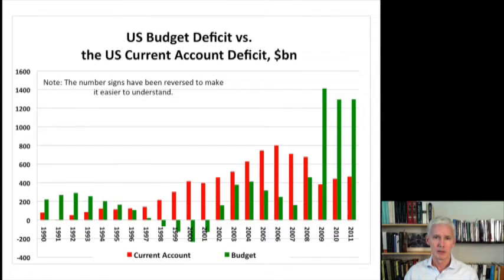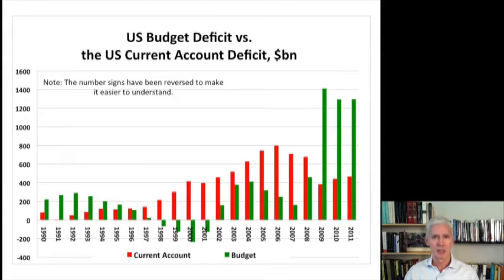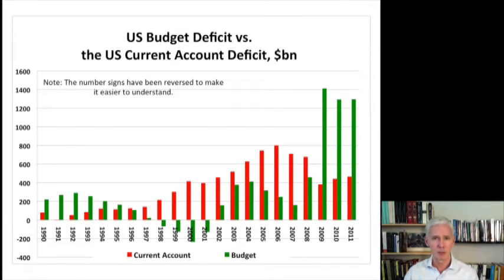So let's compare the U.S. current account deficit with the budget deficit. In this chart there are two bars. The red bar represents the current account deficit, and the green bar represents the government's budget deficit. I've flipped these bars over — they're primarily negative numbers, but in order to make them easier to read and understand, I've flipped them so they appear to be positive numbers.